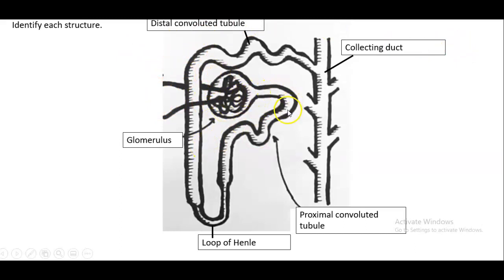This is the proximal convoluted tubule working down to the loop of Henley. And Henley is a name. It's a name of the person who discovered it. So the capital or the H is always capitalized. And then it works its way up through the distal convoluted tubule down to the collecting duct.